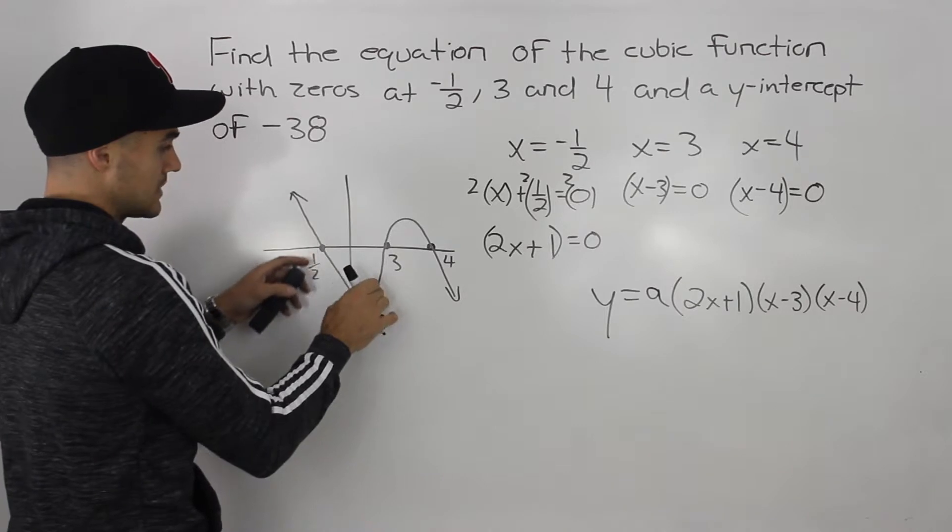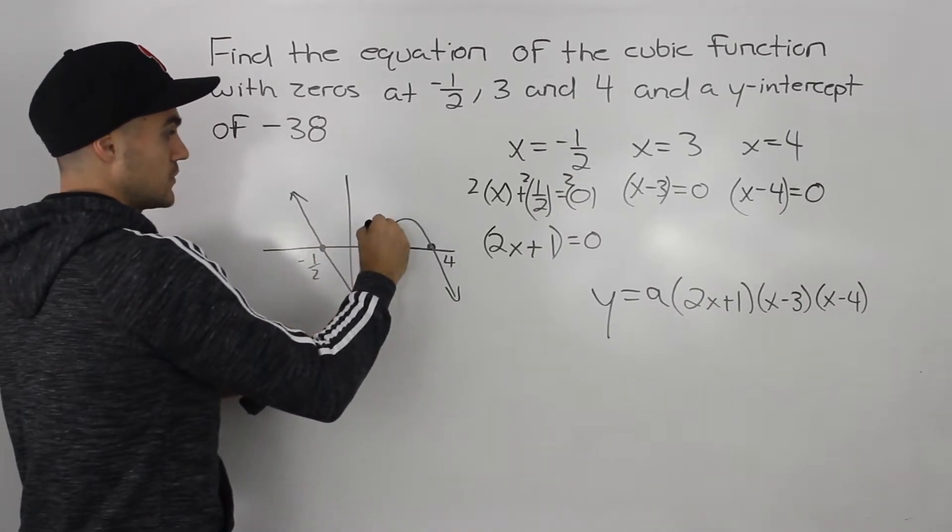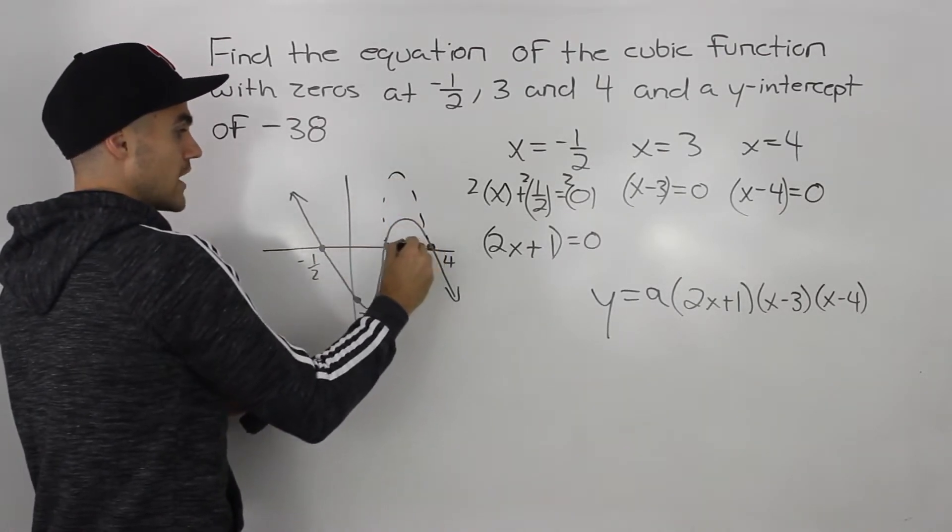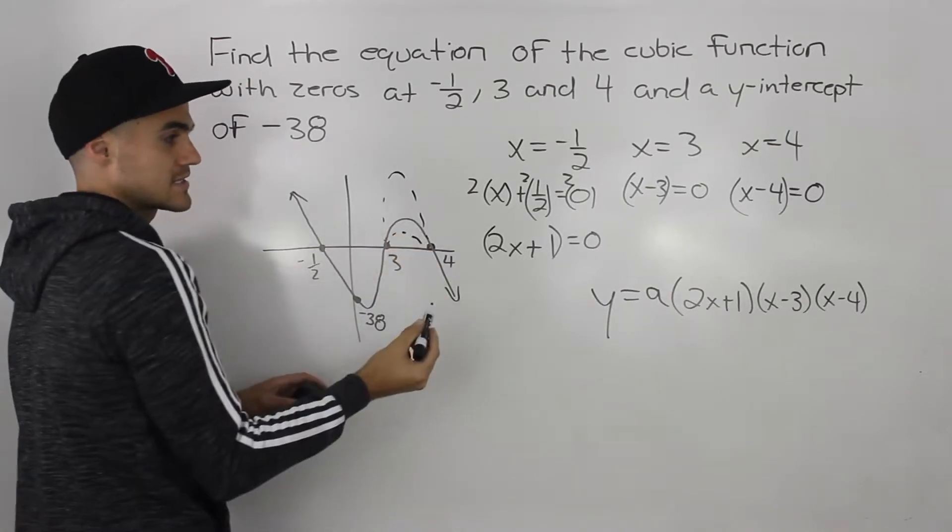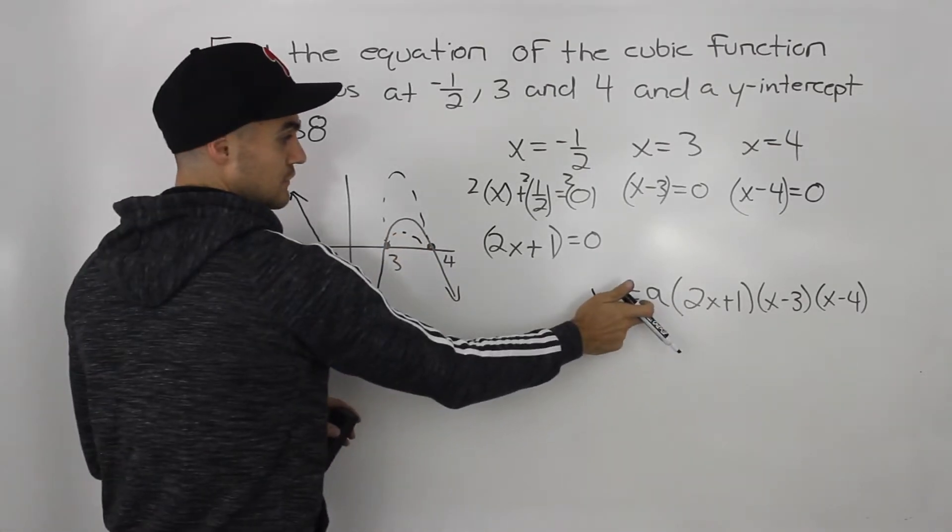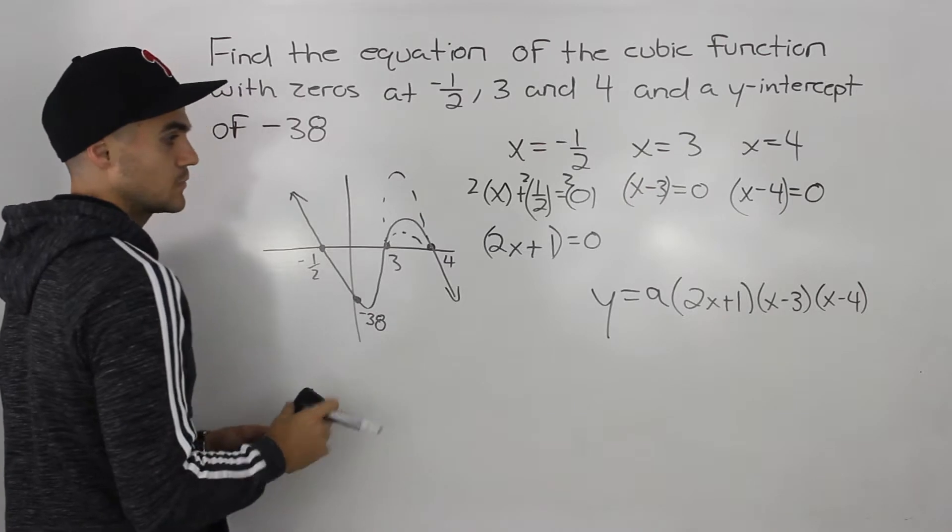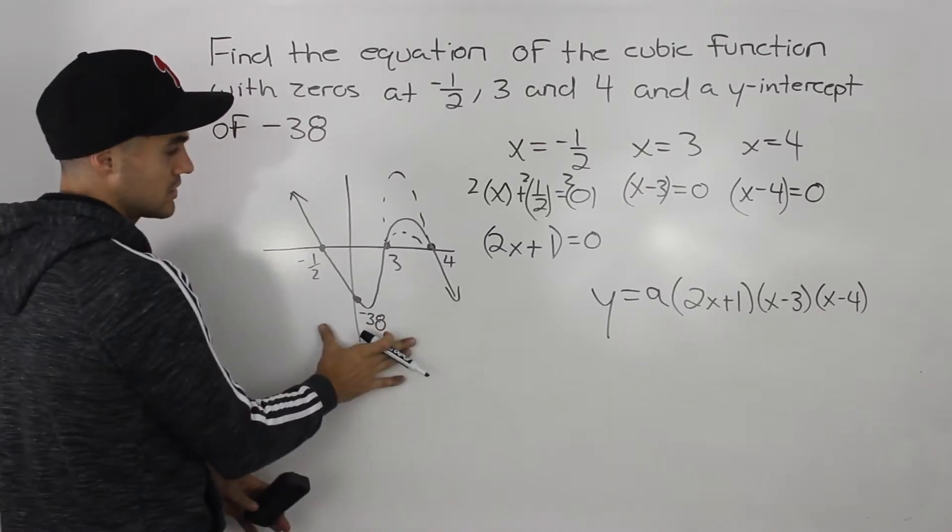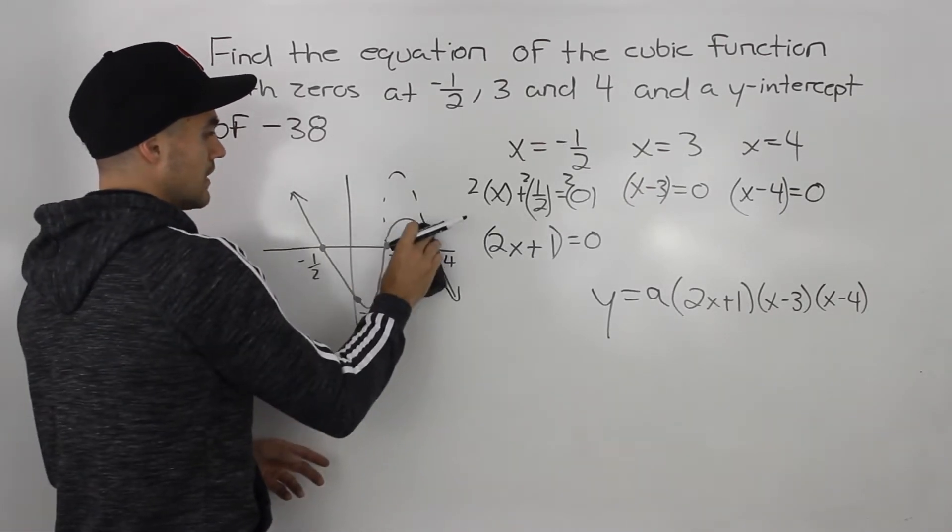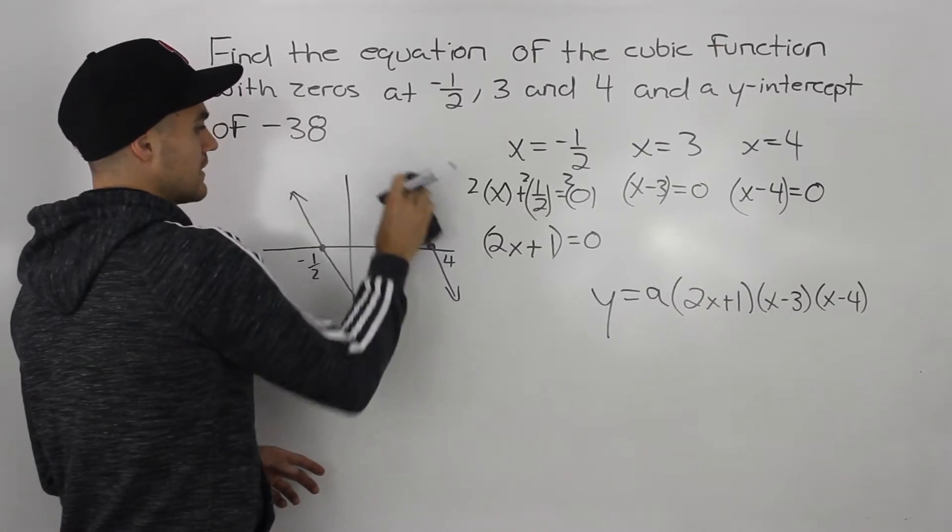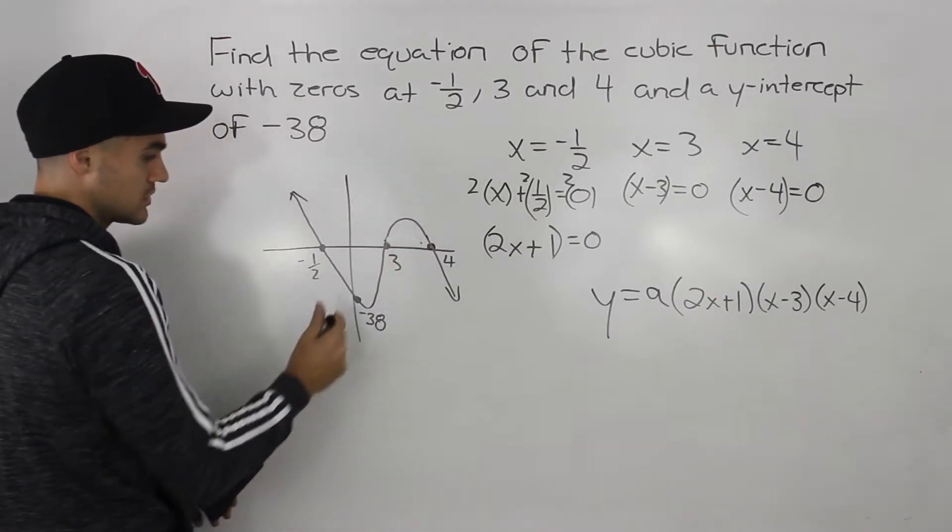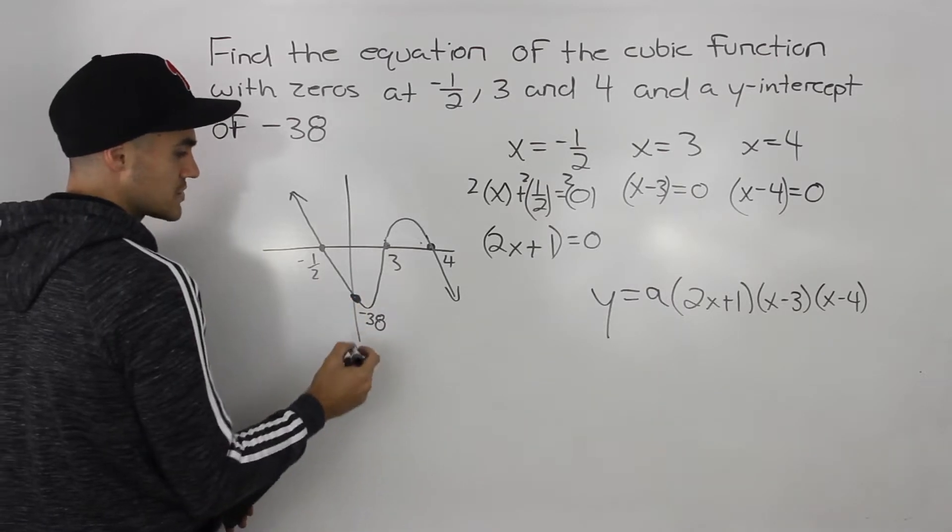Because even though it's going through all these intercepts, we don't know how stretched or how compressed this is. So we have to figure out that a value to see what's the exact equation of this function going to be. And we can use any point other than the x-intercepts that are given on the function, and we are given this y-intercept.